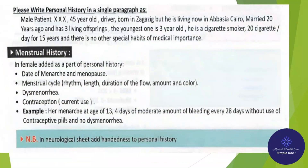Please write the personal history in a single paragraph as follows: 'Male patient XXX, 45-year-old driver, born in Zagazig but living in Abissia, Cairo. Married 20 years ago and has 3 living offspring; the youngest is 3 years old. He is a cigarette smoker — 20 cigarettes per day for 15 years — and there are no other special habits of medical importance.'